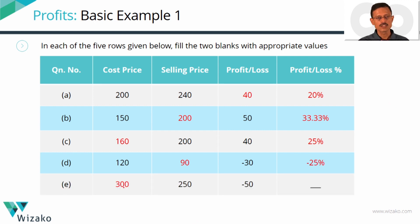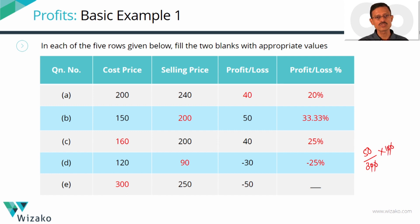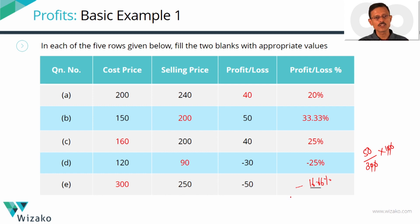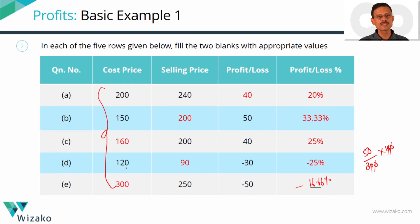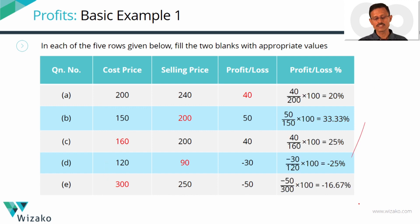Row 5: cost price is 300, loss is 50. Percentage loss = 50/300 × 100 = 16.66%. By now you should be familiar with how to compute loss percentage and profit percentage — they are always percentages of the cost price. The denominator for computing this percentage is always the cost price. Take a quick look at the answers and check whether you got the same.